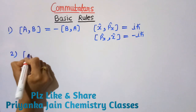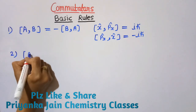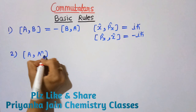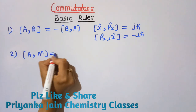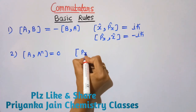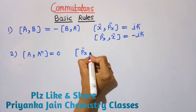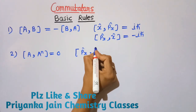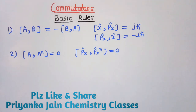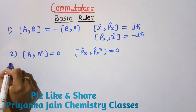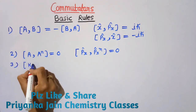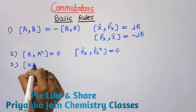Rule 2: The commutator of an operator with a power of itself is always zero: [A, A^n] = 0. For example, if we have to find the commutator of px and px^n, it will be equal to zero — nothing to do here.